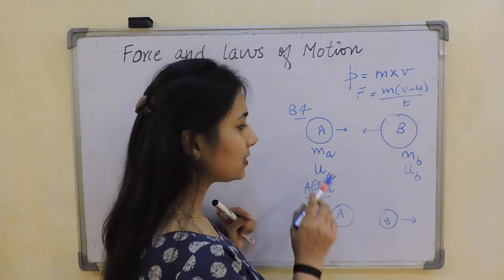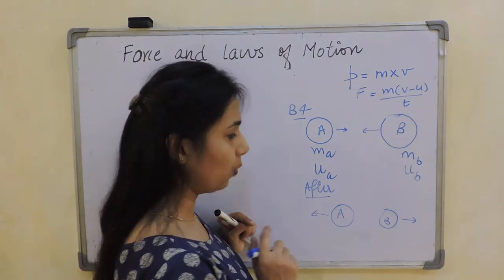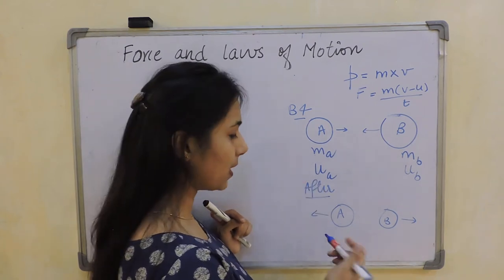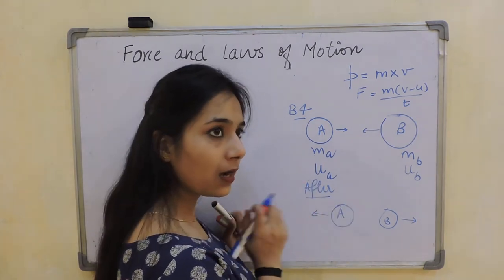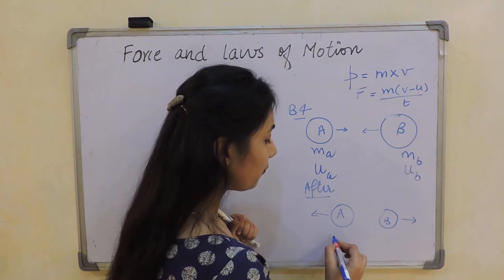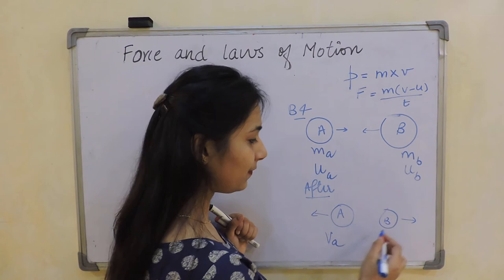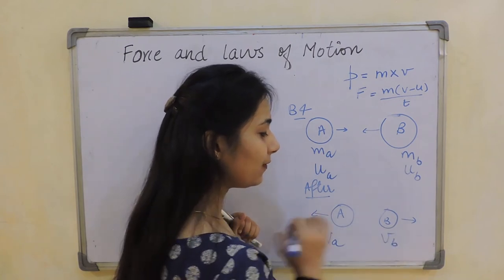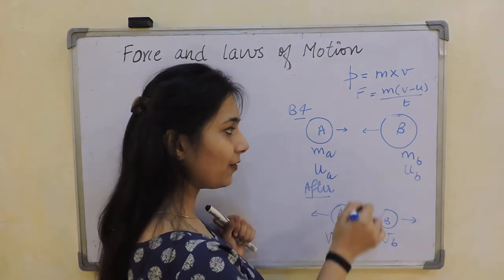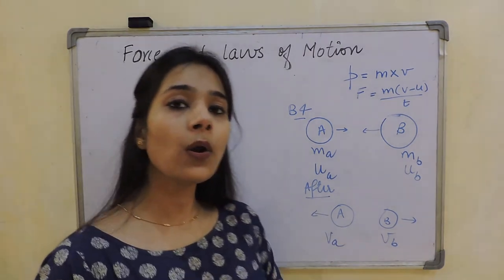Now will the mass change after collision? No, because it's mass. There is a collision happening, but the final velocity will change. So this will have the final velocity as vₐ and this will have the final velocity as v_b. Now we have all the terms we need. According to my law of conservation, my initial momentum is equal to my final momentum.